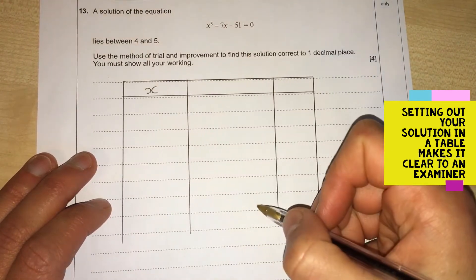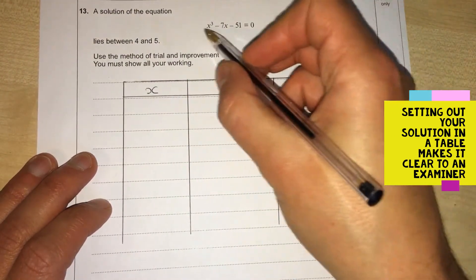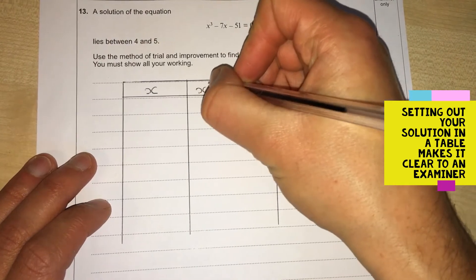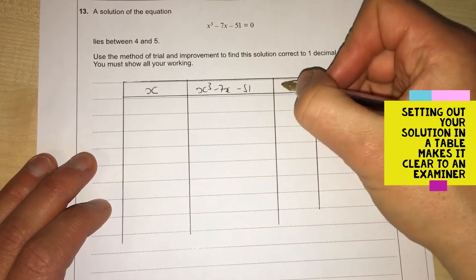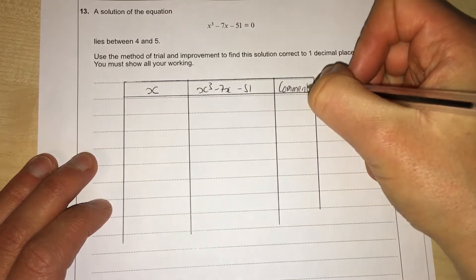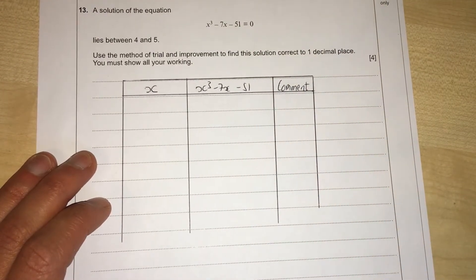In the middle column we're going to have X³ - 7X - 51, and here we're going to write a comment. We're going to use a calculator to do this.